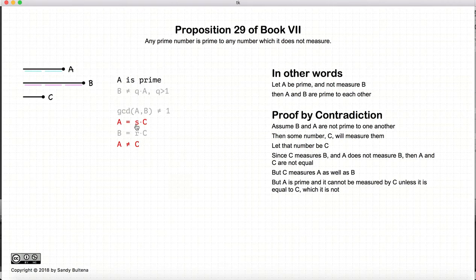So if A is measured by C, but not equal to C, then A is not prime. And that is our contradiction.